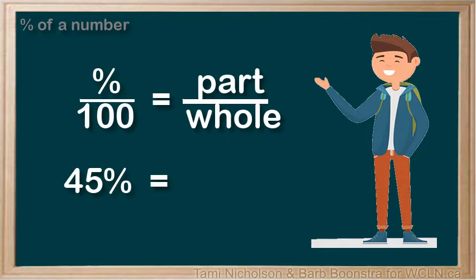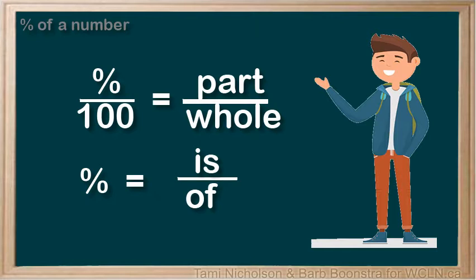45%, for example, is 45 out of a total of 100. Another way of stating the percent ratio is percent over 100 equals is over of.